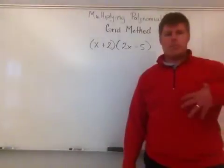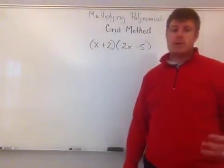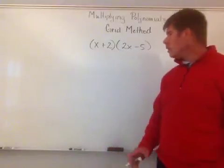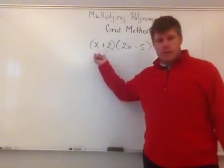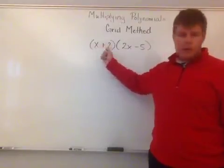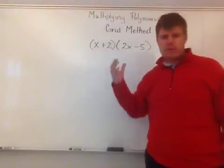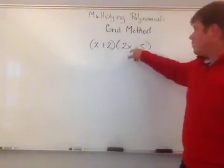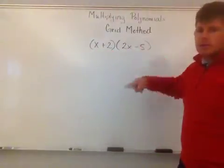The important thing here to be able to even use the grid method, the first thing is you have to be able to identify how many terms a polynomial is made up of. So if I take a look at this first polynomial up here, which is a binomial, it's made up of two terms. Whatever separates addition or subtraction separates your terms. So I have one addition sign separating two terms, and in this one I have one subtraction sign separating two terms.